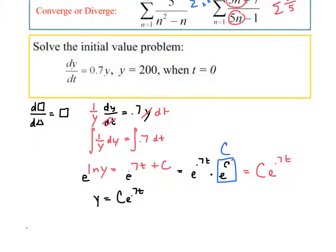So now I say, when t is 0, y is 200. So I can solve for the constant. So e to the 0 is 1, so the constant is 200. So my final equation is 200 times e to the 0.7t.